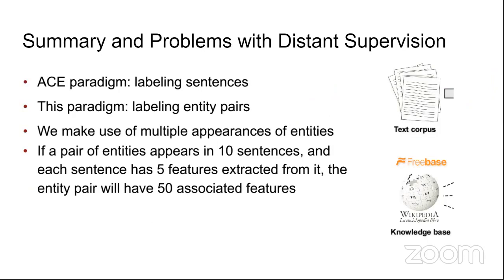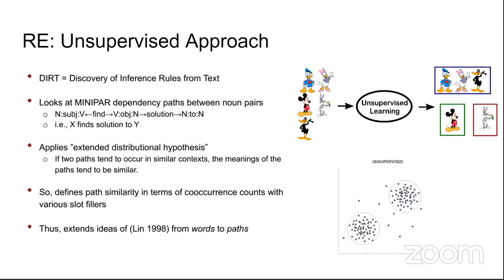Moving to unsupervised approaches: if you don't have good knowledge bases and only have text, you use unsupervised methods. One popular approach was DIRT — Discovery of Inference Rules from Text — which looks at dependency paths between noun pairs. Unsupervised approaches for relationship extraction apply the extended distributional hypothesis: if two dependency paths tend to occur in similar contexts, their meanings tend to be similar.